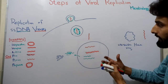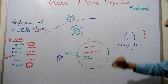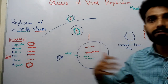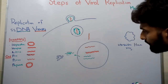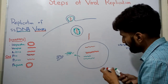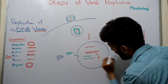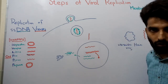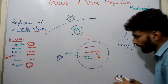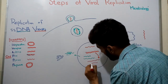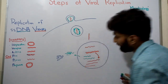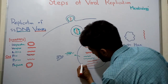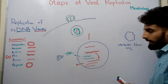Now we need to replicate the DNA. Since the original genome of this virus is single-stranded DNA, we need single-stranded DNA copies. DNA polymerase is used, and from the double-stranded DNA, single-stranded DNA copies are made in the nucleus.